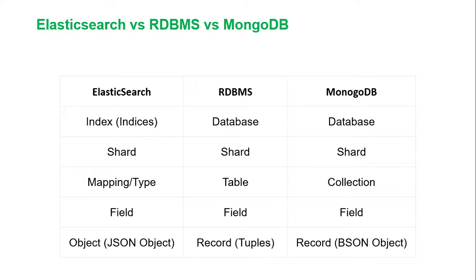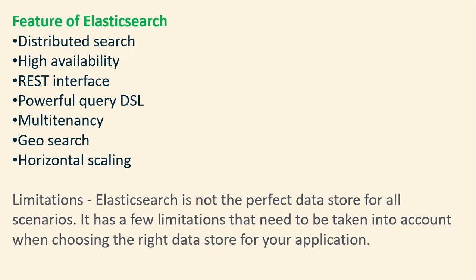Fields are called fields in both MongoDB and Elasticsearch. Elasticsearch has objects as JSON objects; in RDBMS it is called a record, stored in the form of tables; and in MongoDB data is stored in the form of BSON. So in Elasticsearch it is a JSON object, but in MongoDB it is a BSON object.